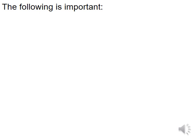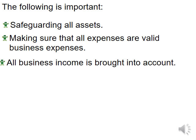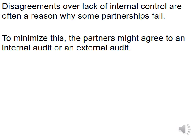The following is important for internal control: safeguarding of all assets; ensuring all expenses are valid business expenses and that the business is not paying for a partner's personal expenses; and ensuring all business income is accounted for and does not go directly into a partner's pocket — all income must be recorded in the business. Disagreements and lack of internal control are often reasons why partnerships fail. To minimize this, the partners might agree to an internal or external audit.